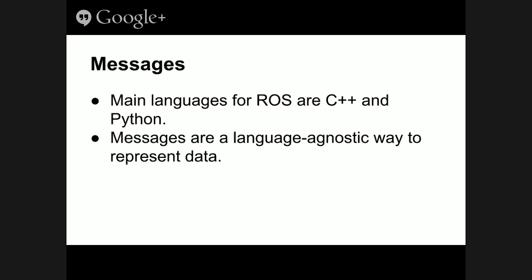ROS supports C++ and Python as its primary languages, with some support for Java and others. The question is how do you transfer data between C++ and Python? There's a language-agnostic representation called messages. ROS has defined their own kinds of structured data, and when you build your code it will automatically create C++ and Python classes based on the message definition you provide.